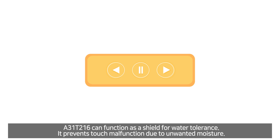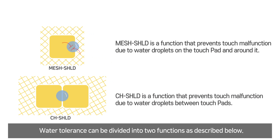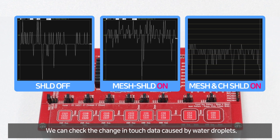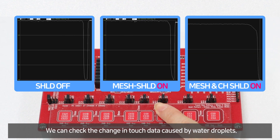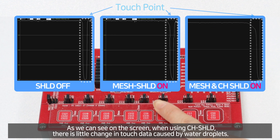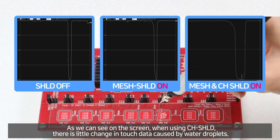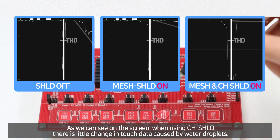A31T216 can function as a shield for water tolerance. It prevents touch malfunction due to unwanted moisture. Water tolerance can be divided into two functions as described below. We can check the change in the touch data caused by water droplets. As we can see on the screen, when using CH shield, there is little change in touch data caused by water droplets.